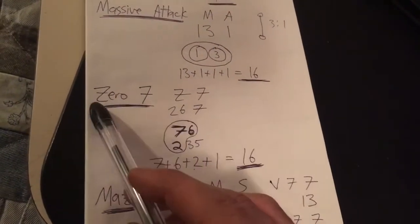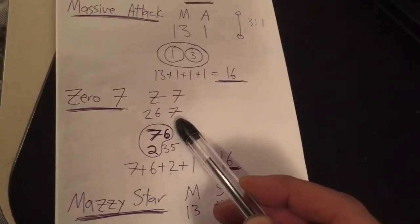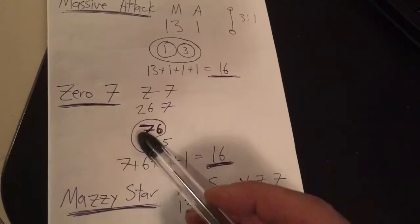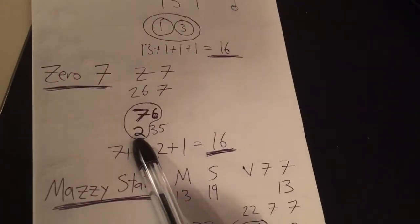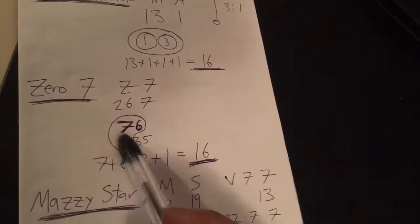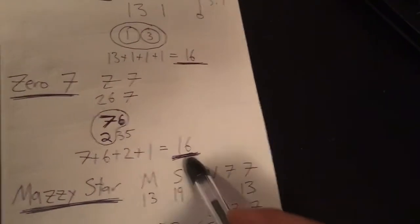And then we had Zero Seven. Now Zero Seven is the 26th letter and the 7th letter. Right away I see 76 and a 2. So 76 and a 2 reminded me of that. Anyway, 7 and 6 and 2, put the circle around it - 16.